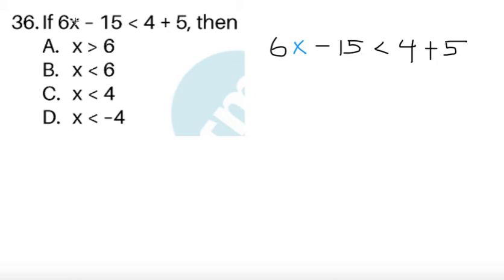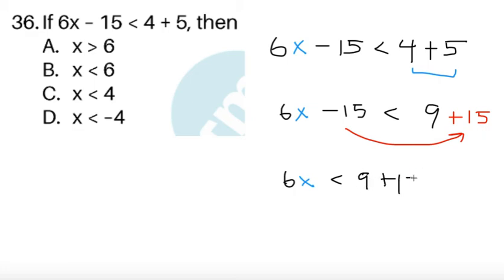Now last for item 36, this is just a simple algebra practice. So we're going to solve for x in the equation. 6x minus 15 is less than 4 plus 5. So let's simplify 4 plus 5 first. So 6x minus 15, that's less than 4 plus 5, that's equal to 9. And then we add 15 to both sides. So for negative 15, you put it on the other side, it's going to become plus 15. So we will be having 6x is less than 9 plus 15. And then since 9 plus 15 here, that's equal to 24.